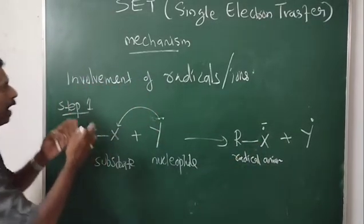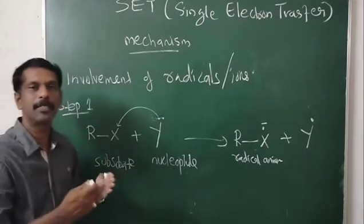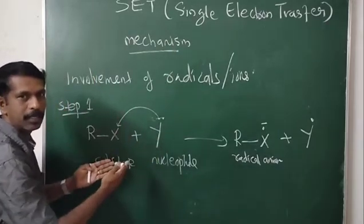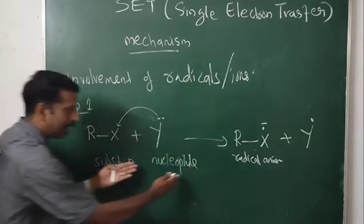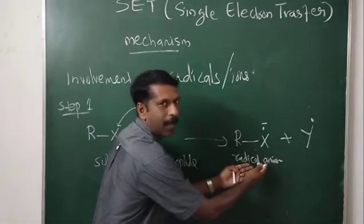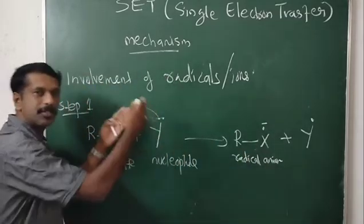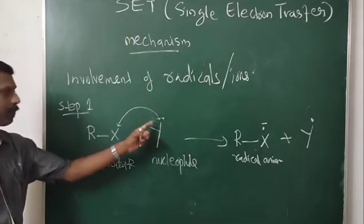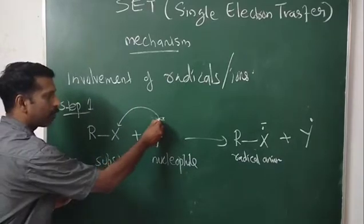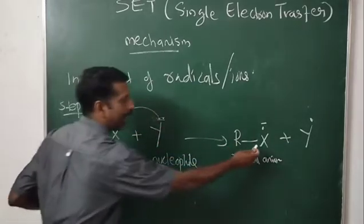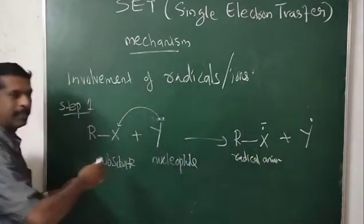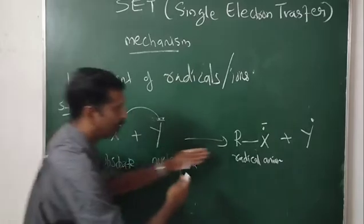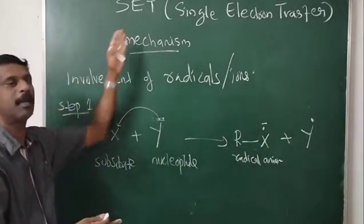This is the first step. In nucleophilic substitution reactions where the reaction proceeds with the formation of a radical or radical ion, the mechanism is known as SET Mechanism. If a mechanism starts with the formation of a radical, that type of mechanism is known as SET Mechanism.